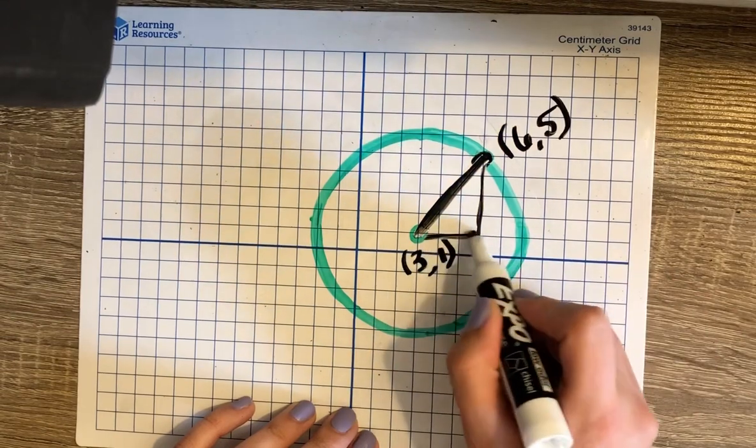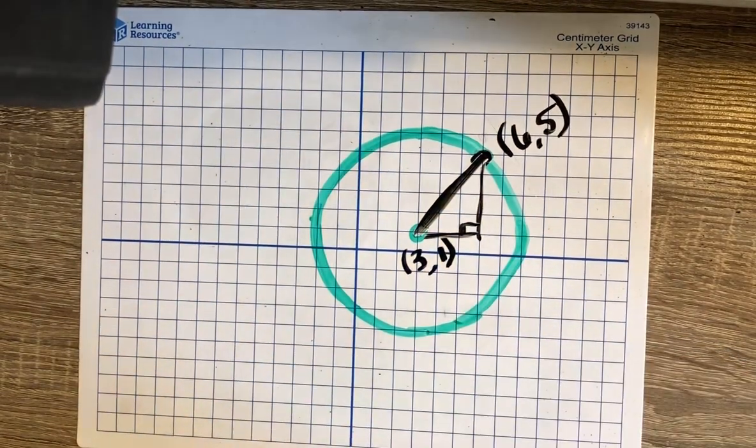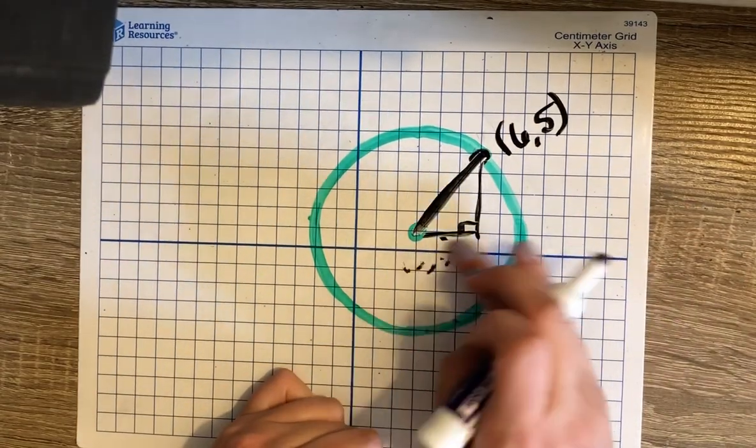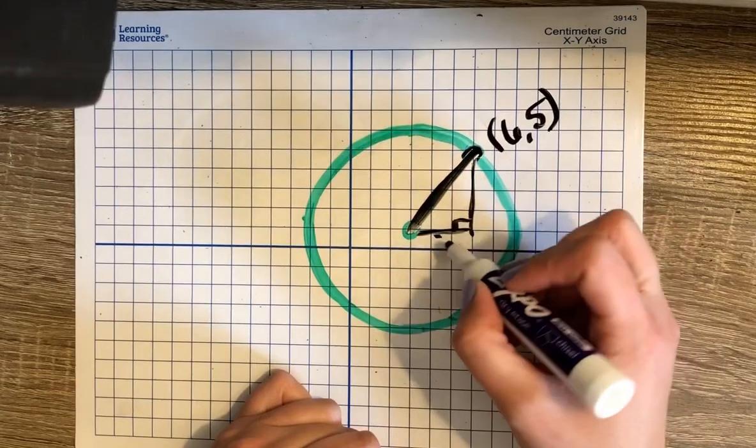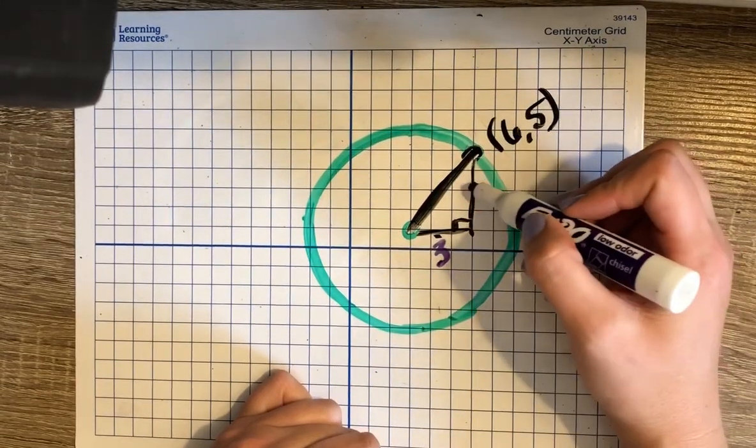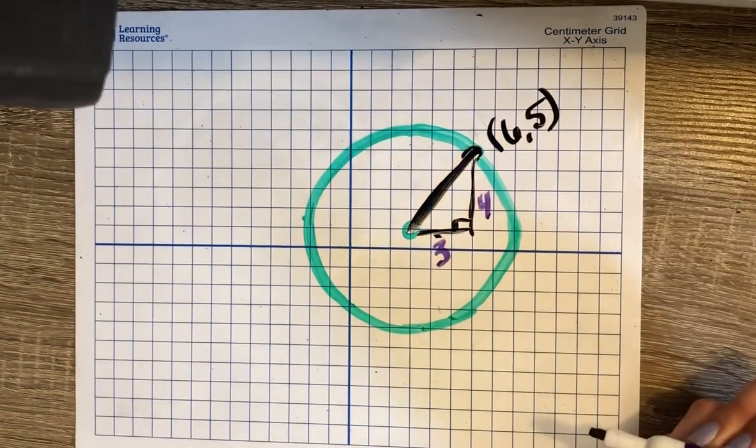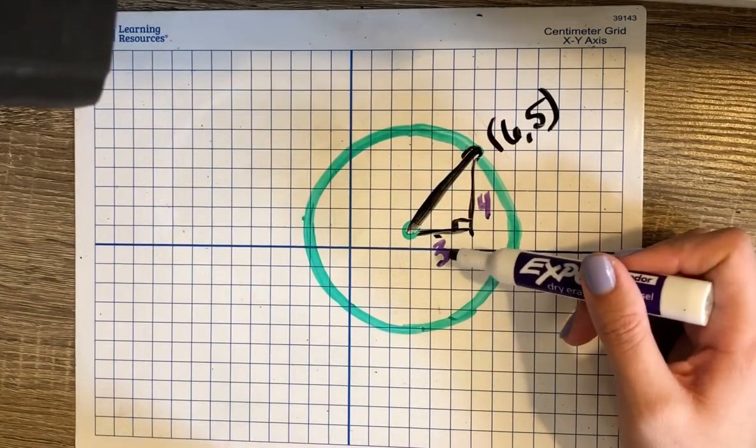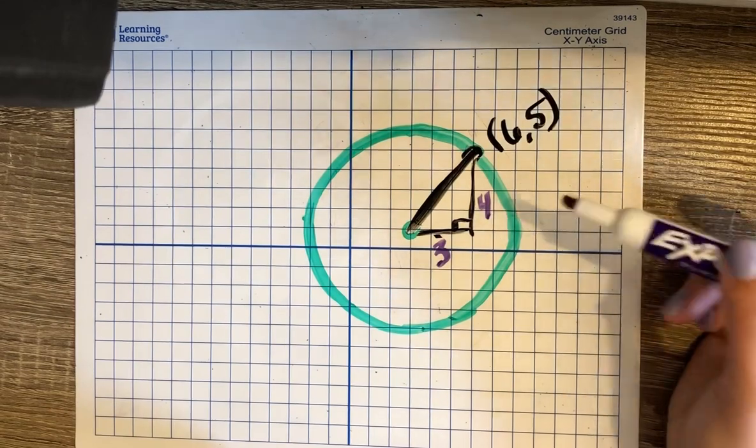In this right triangle, the length at the bottom is 3 and this length is 4. You may remember that that is going to create a Pythagorean triple. If I went through and did 3 squared plus 4 squared equals r squared, I would end up getting 5.